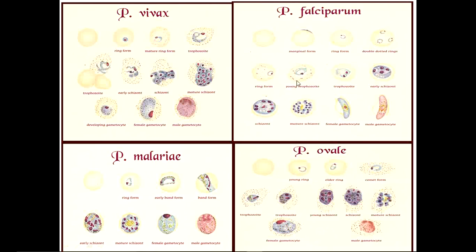In plasmodium falciparum, the mature trophozoite is more compact in shape. The schizont fills almost two-thirds of the RBC with 8 to 24 merozoites. Most importantly, the gametocyte has a banana-shaped, crescent, or half-moon appearance — quite different from the rest of the species. Gametocytes of plasmodium vivax, malariae, and ovale are more or less round or oval in shape. Plasmodium malariae and plasmodium ovale trophozoites have a more squarish appearance; the mature trophozoite of malariae is band-form, while ovale is more comet or slightly amoeboid in shape.